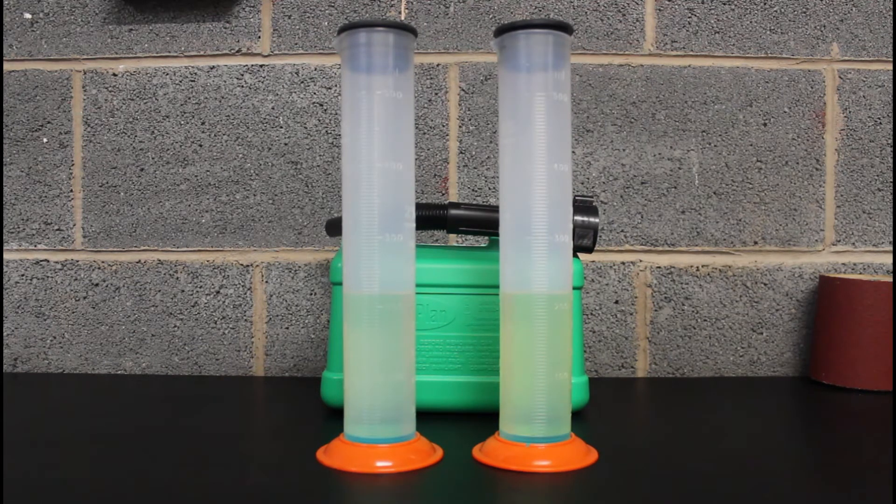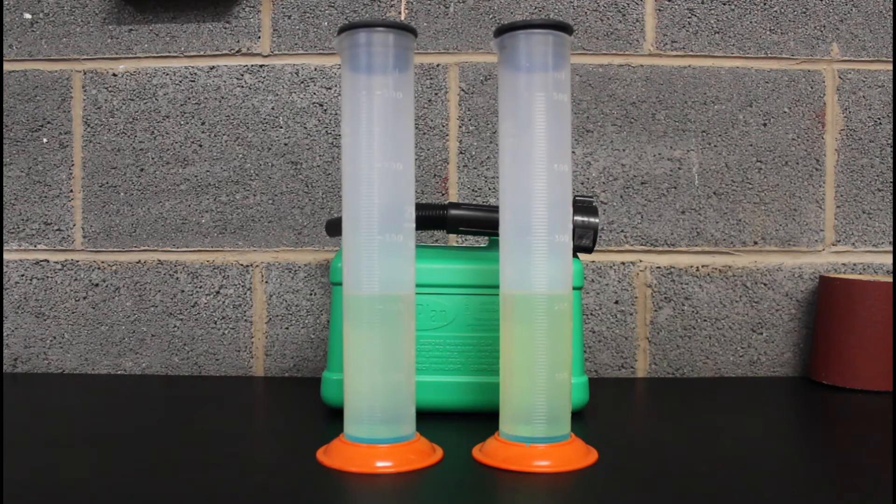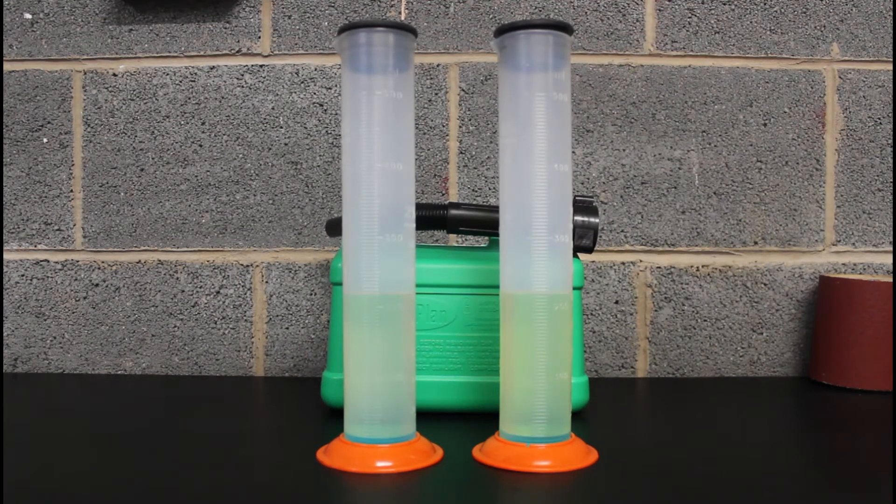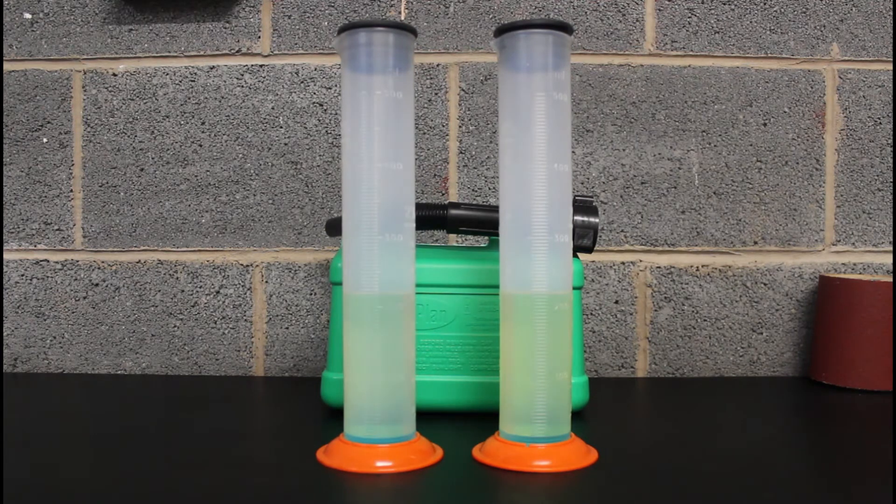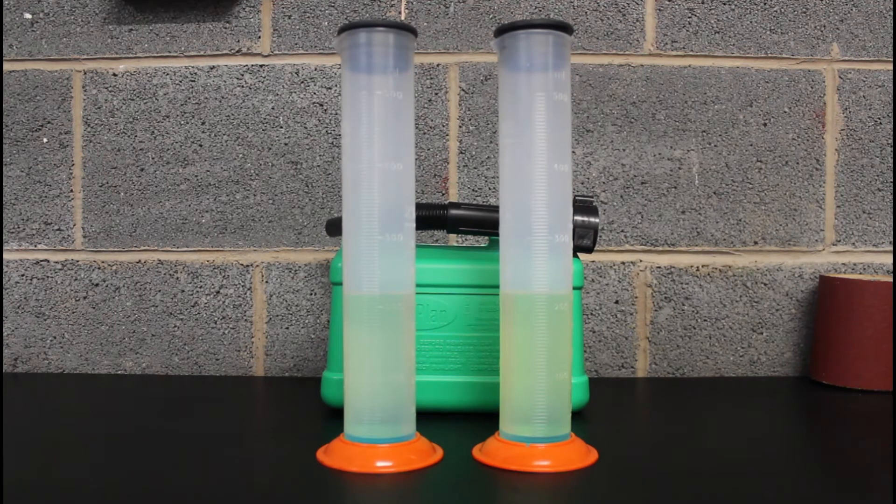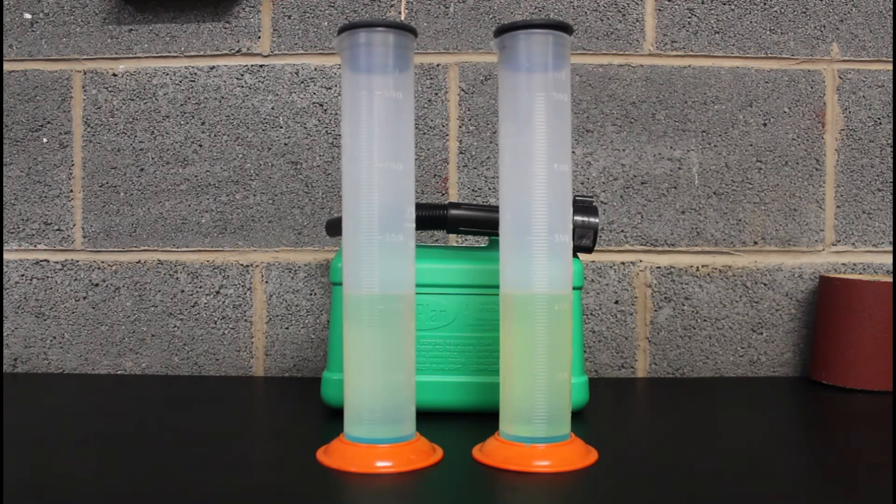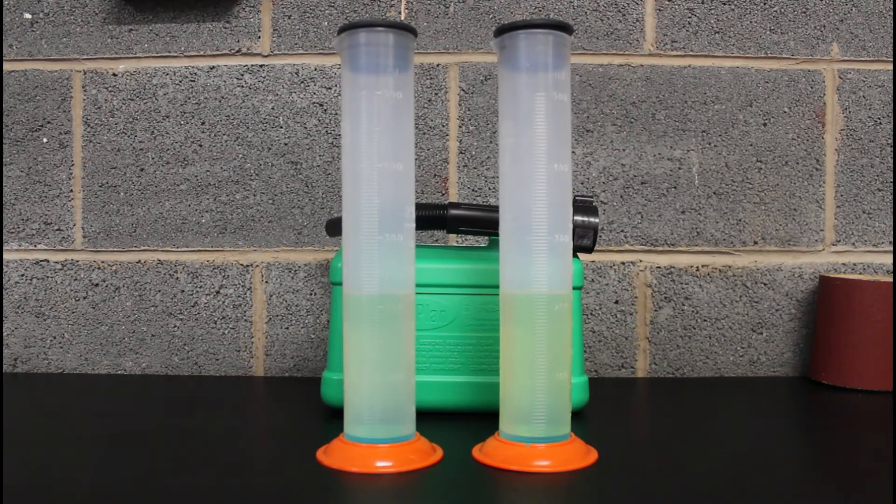The one on the left is the standard E10 and that came in at 146.9 pence a litre, and the one on the right which is the Supreme 99 Texaco came in at 163.9 pence a litre. A bit of a difference in colour, not as big as some of them.